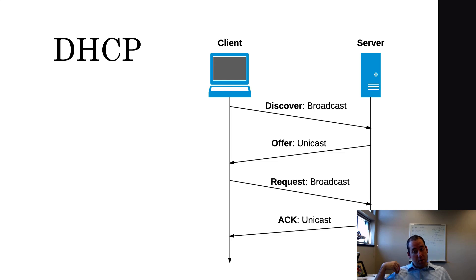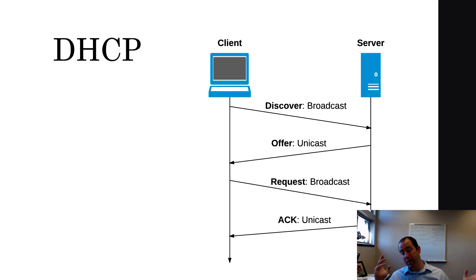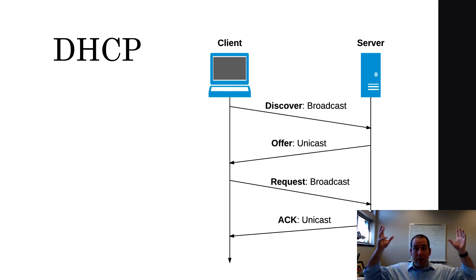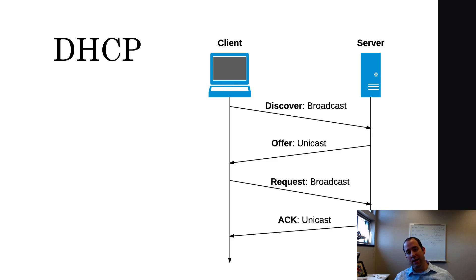It might seem a little silly to send a request after already receiving an offer, but the trick is that you might have multiple DHCP servers on a single network. If all of them receive the broadcast, they might all respond with different offers. So a single client might receive three DHCP offers. Rather than keeping those IP addresses continuously reserved for a client that won't use them, it broadcasts a request to the one DHCP server for the one set of parameters it wants. That way, all the other DHCP servers know: he's not using that one, I can reuse it for the next discover request.